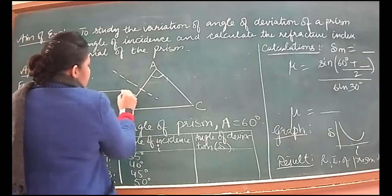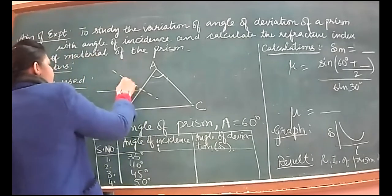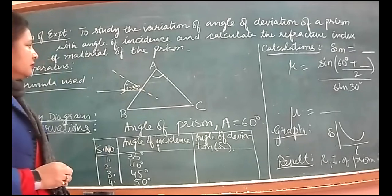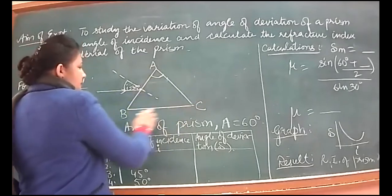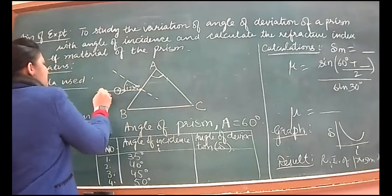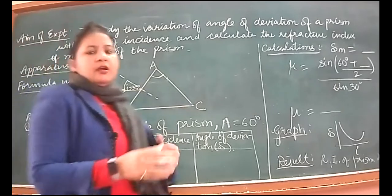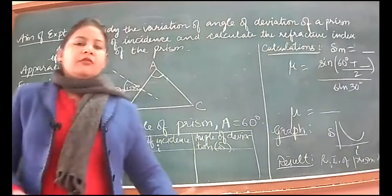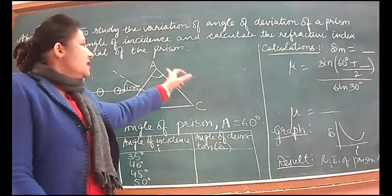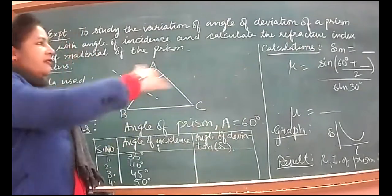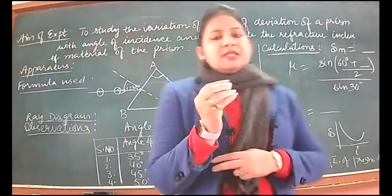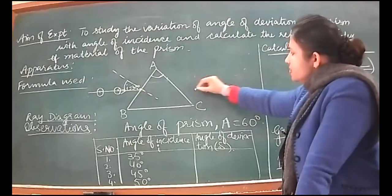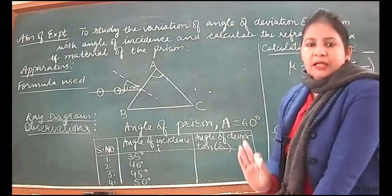Then we will keep the prism here and fix two pins on the incident ray, three to four centimeters apart. Then what we will do after keeping the prism: we will see the image of these two pins from face AC. And where we see the image of those two lines, in the same direction we will put two more pins.